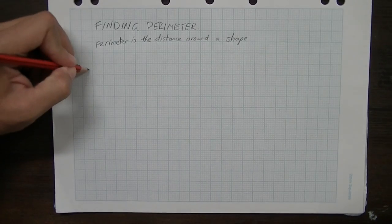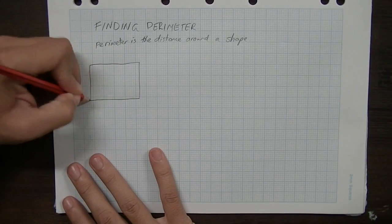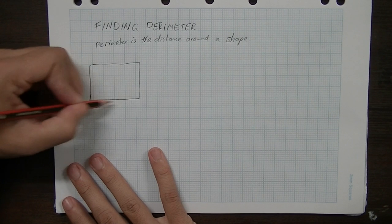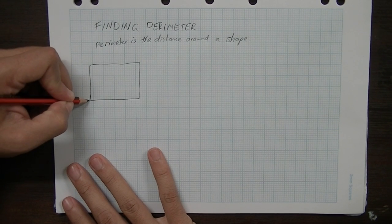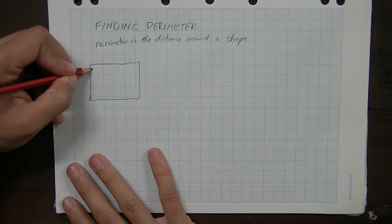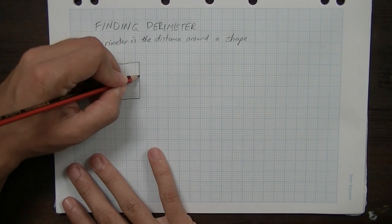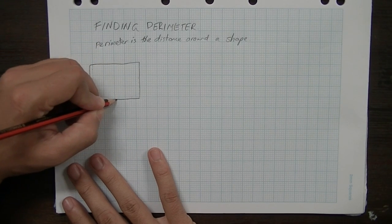So for example, if we have this rectangle here, the perimeter is the distance that you would need to walk if you were to walk all the way around that shape.